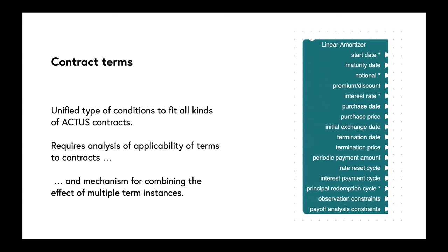We've got a general unified type of conditions to fit all kinds of ACTUS contracts. You see here an example of the linear amortizer, the LAM contract, which has a number of different conditions. The data decorated with a star are different. We have slightly different conditions that are required for a LAM contract than for a PAM. Using a single type is nice and flexible, but it also requires us to do some analysis on which terms are applicable to which contracts.